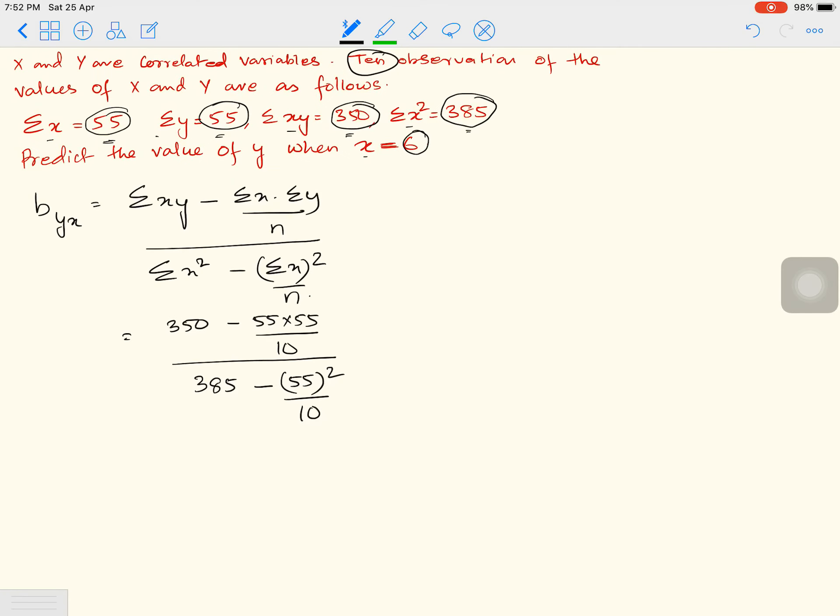So that's 350 minus 3025, if you multiply 55 and 55 divided by 10, then 385 minus 3025 divided by 10. I'll continue here.